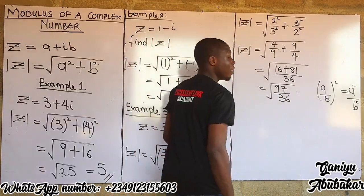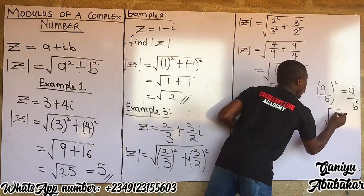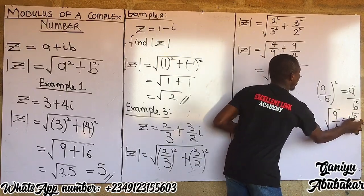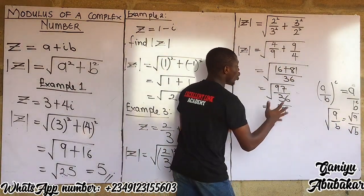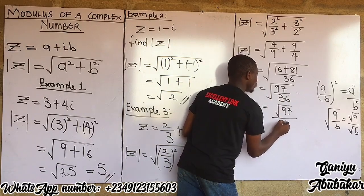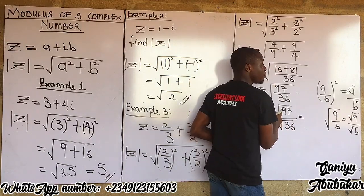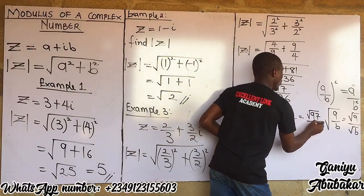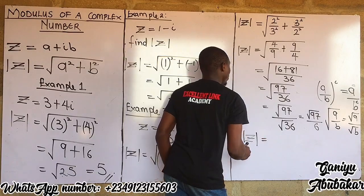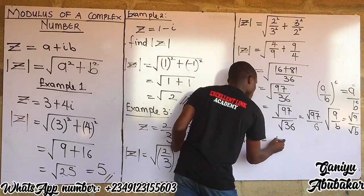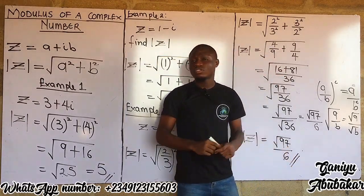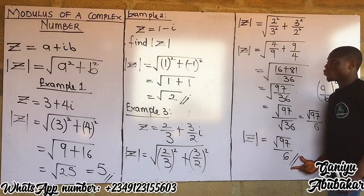Applying the surd rule — the square root of a over b equals root a over root b — this gives the square root of 97 all over root 36. Since root 36 equals six, the modulus of this complex number is root 97 all over six as the final answer.